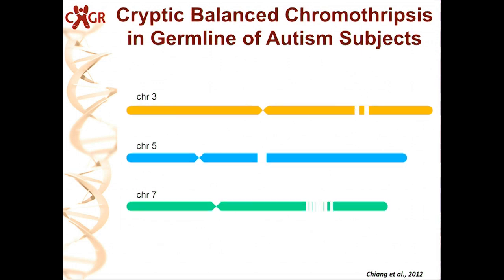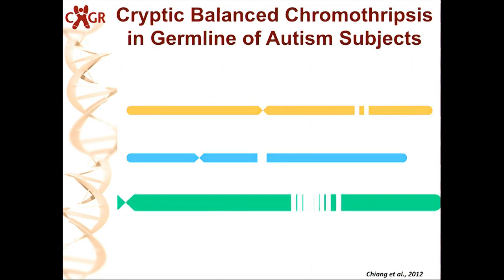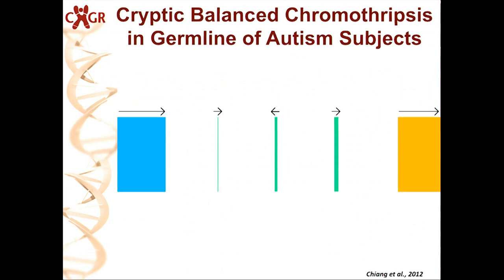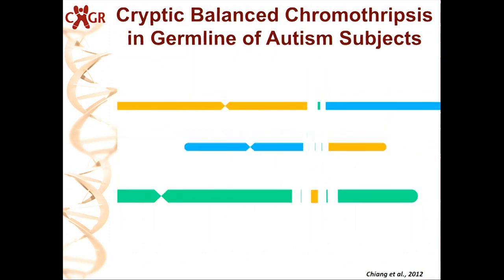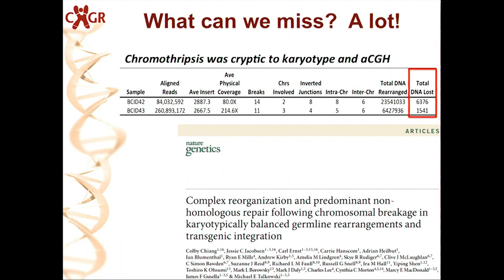A second example: we were told there was a translocation between chromosomes 3 and 5, but when we sequenced it, we never found a rearrangement between 3 and 5. What actually happened was chromosome 7 was shattered into a number of different pieces and inserted into the breakpoints between chromosomes 3 and 5 — 11 different breakpoints among three chromosomes, all shattered and stitched back together in aberrant ways. These were thought to be balanced; array CGH was completely normal. Yet one child had 23.5 megabases of DNA rearranged — about 0.7% of their genome — but lost only 6 KB of DNA. The second child had about 6 megabases rearranged yet less than 2 KB were actually gained or lost.